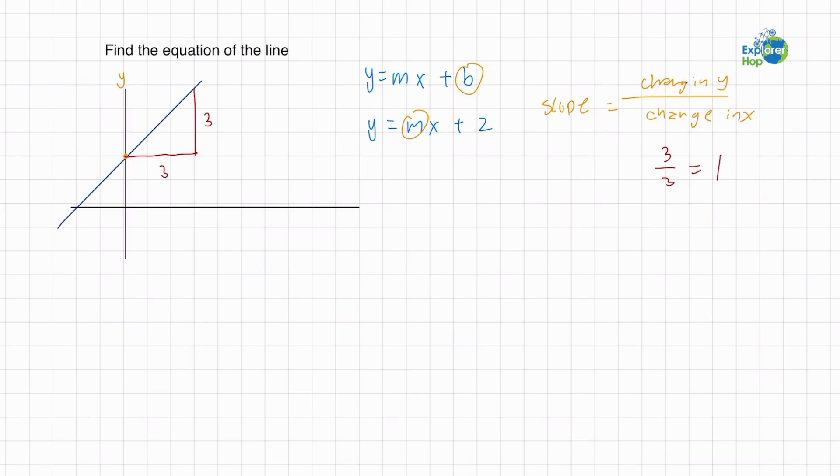Now we have the equation of our line. It should be y equals 1x, where we can just say x. y equals x plus 2.